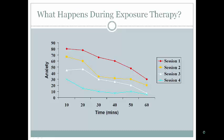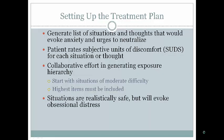In setting up a treatment plan, generate a list of situations and thoughts that evoke anxiety and urges to neutralize, have the patient rate each on the SUDS scale, and collaboratively generate the exposure hierarchy. Ensure situations are realistically safe but will evoke obsessional distress — for example, you wouldn't put someone afraid of heights on the edge of the Empire State Building.